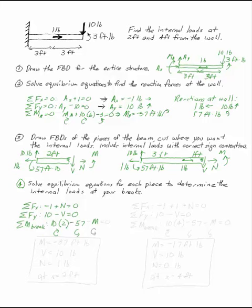m is therefore equal to minus 37 foot pounds, v is 10 pounds, and n is 1 pound at x equals 2 feet.